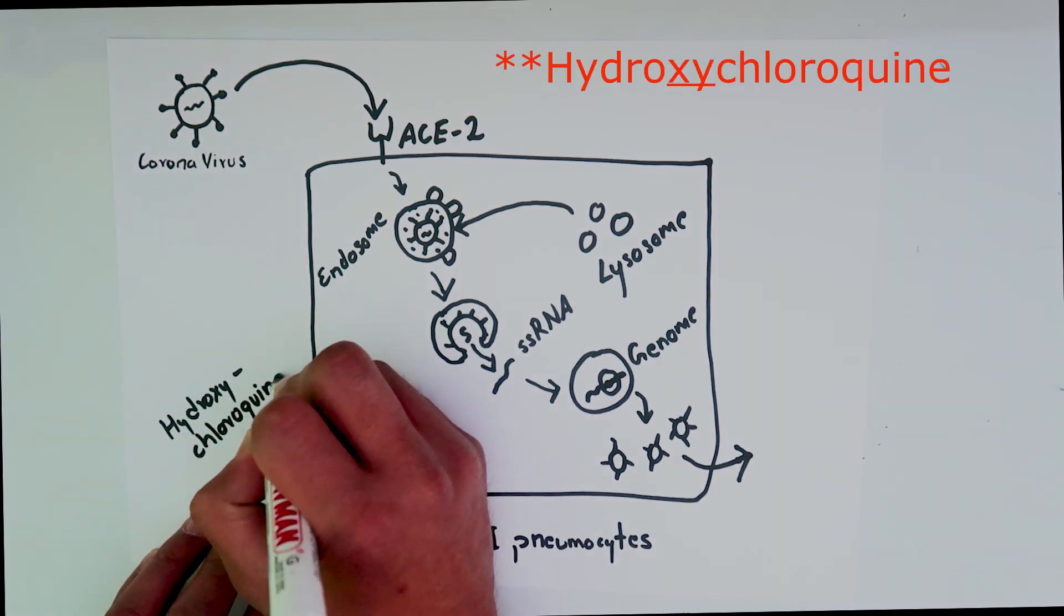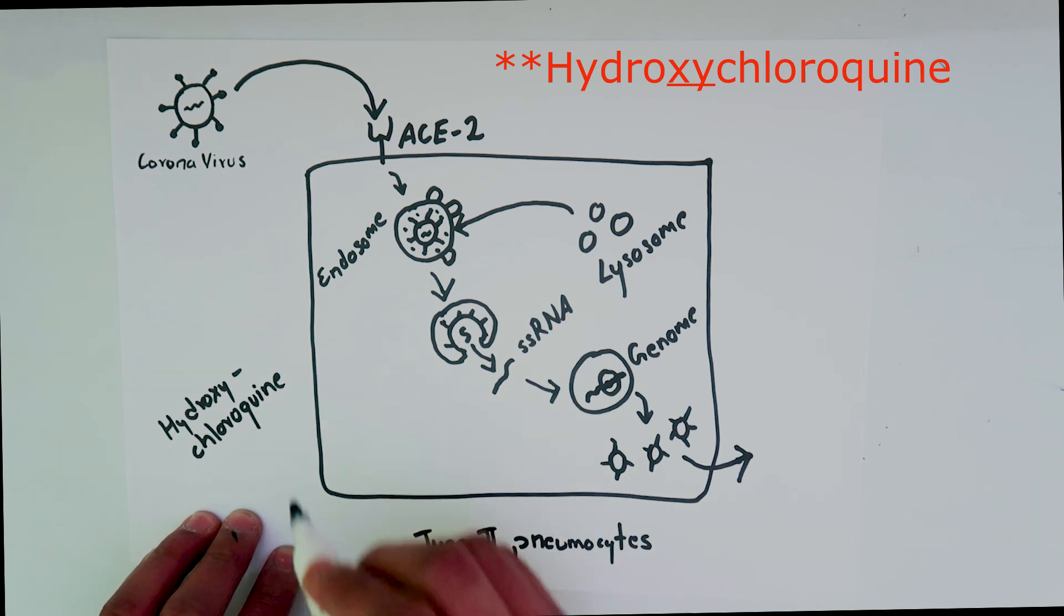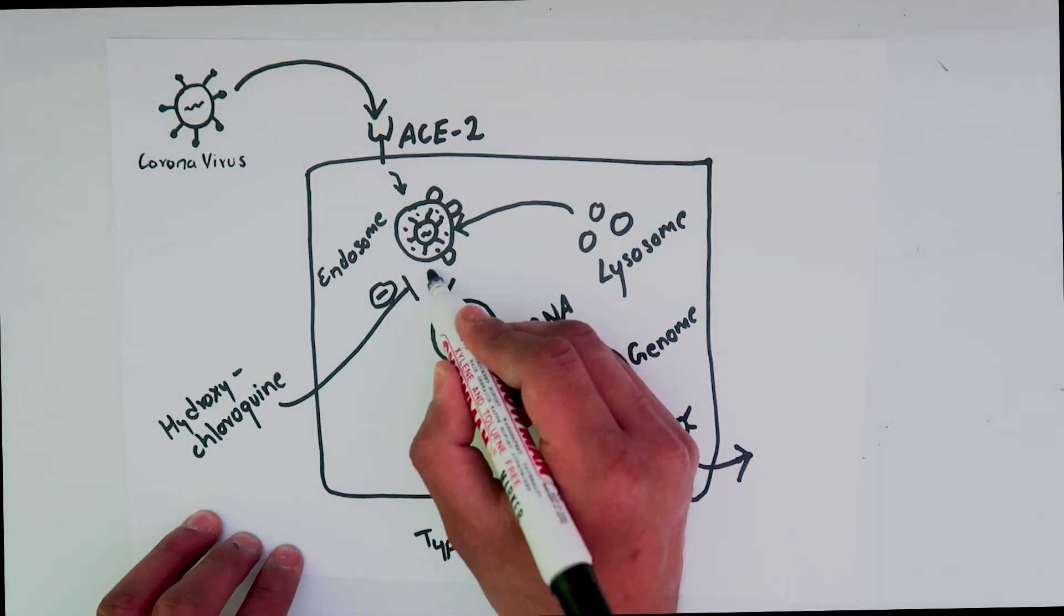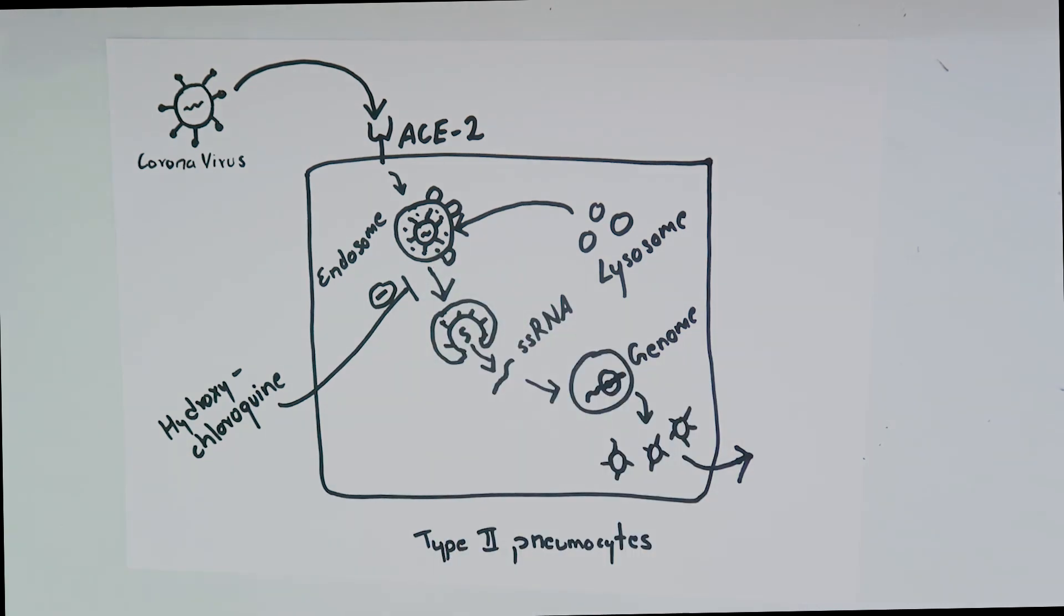The function of hydroxychloroquine comes at this stage. Since hydroxychloroquine is a weak base, it increases the pH inside the endolysosome and blocks the activity of lysosomal proteases. This prevents the release of viral RNA into the cell, and thus the virus cannot show its effect.